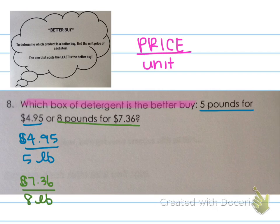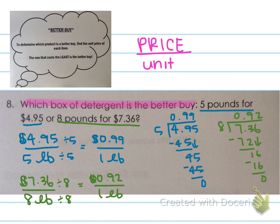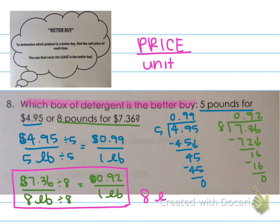Go ahead and pause the video to find the unit prices, then press play and we'll continue. The unit price for the 5-pound bag is $0.99 per pound. The unit price for the 8-pound bag is $0.92 per pound. Which one costs the least amount per pound? That would be the 8-pound bag — this is the better buy. So the 8-pound bag is the better buy. And of course, by bag, I mean box.